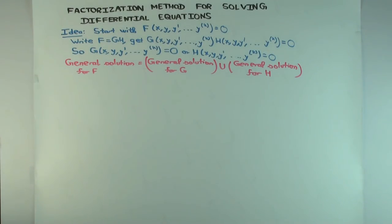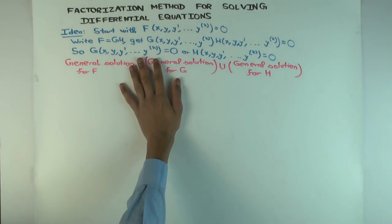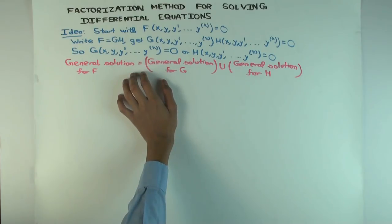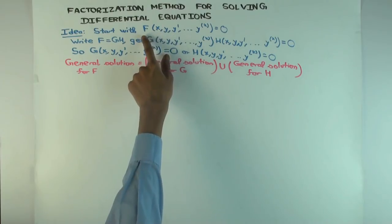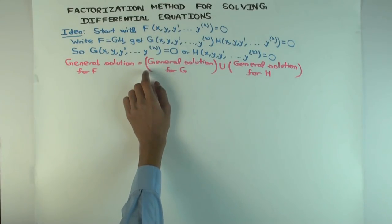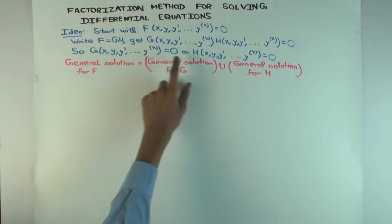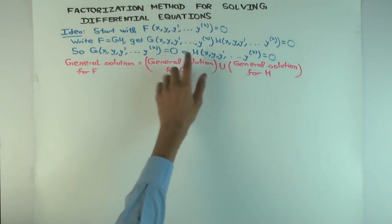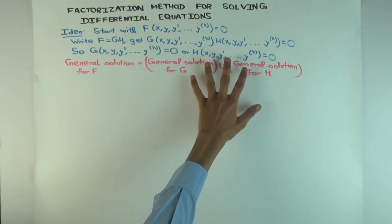Well, it could happen. This is a very minor point, but the thing is that it could happen that there is a solution which, remember, for every x in the domain of F this is zero. Now it could happen that there is a solution which for every x the F is zero, but it's not true that for every x G is zero or for every x H is zero. Rather for some x, G is zero, and for some x, H is zero.